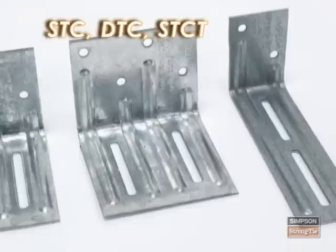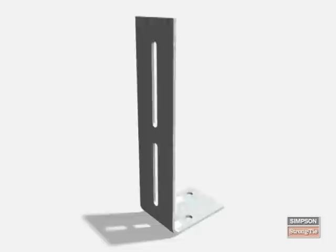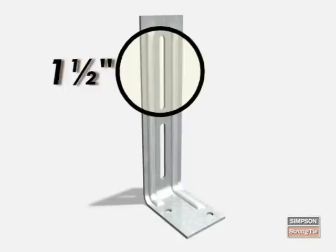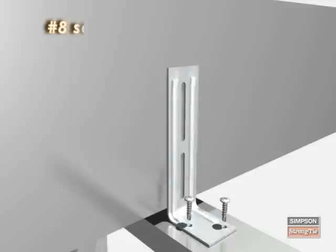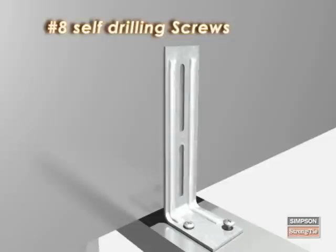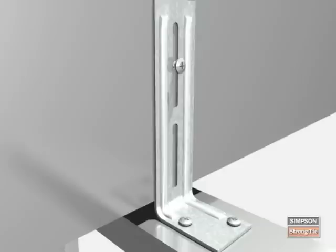Truss slip clips — the STC, DTC, or STCT — support the top of a non-load-bearing wall while allowing vertical movement of the truss cord. The 1.5-inch slot permits vertical truss cord movement when loads are imposed on the structure. To install the STCT, first place it on the top plate and position it next to the truss. Then install two number 8 screws into the top track. Install slot screws in the middle of the slot. Screws installed into the truss or rafter should not be driven too tight, to allow vertical truss movement.